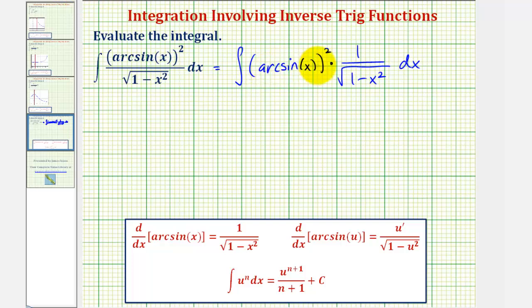Again, now if we let u equal arc sine x, then differential u would be equal to the derivative of arc sine x times dx, which is one divided by the square root of one minus x squared, dx.